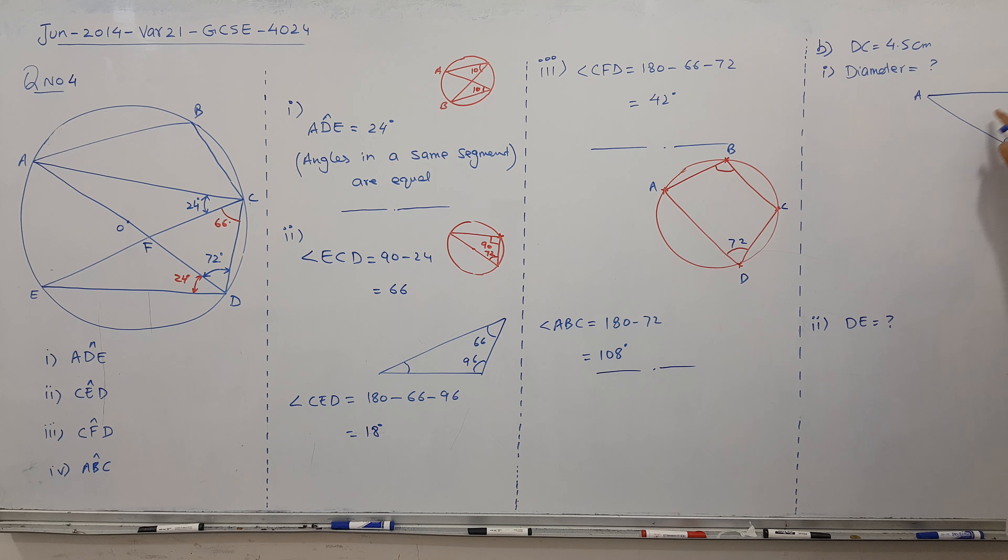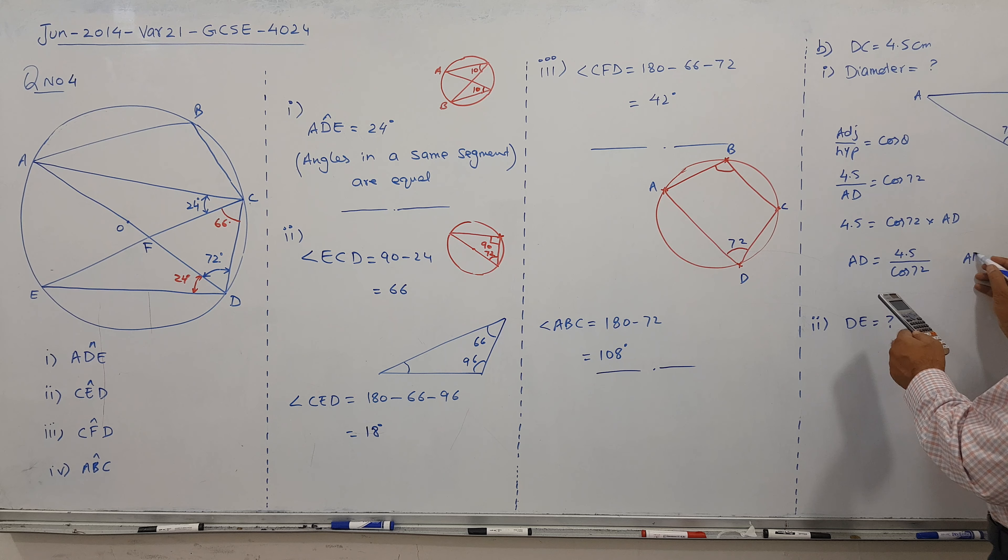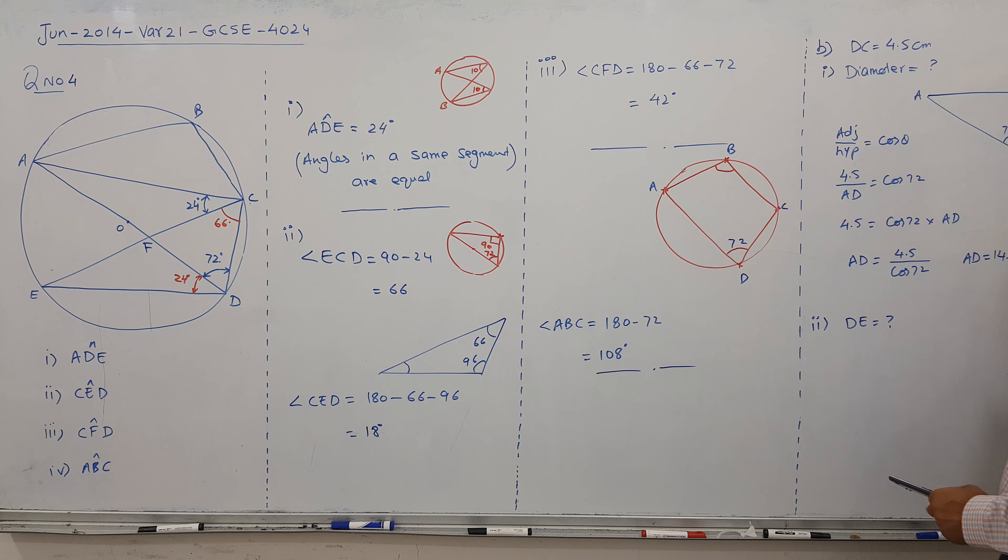Adjacent 4.5, hypotenuse is AD, theta is 72 degrees. So AD equals 4.5 divided by cos 72. That's 4.5 divided by cos 72, giving us 14.6 centimeters. We have finished this part.